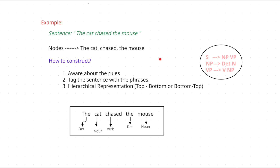Then you have to tag the sentence with the phrases. So for the sentence 'The cat chases the mouse,' I have tagged it with parts of speech. 'The cat' is the noun phrase, 'chases' is the verb, and 'the mouse' is the noun phrase. Then you divide this noun phrase into determiner and noun, and you divide the verb phrase into verb and noun phrase. This noun phrase can further be divided into determiner and noun. Let me show you in a graphical, hierarchical representation.